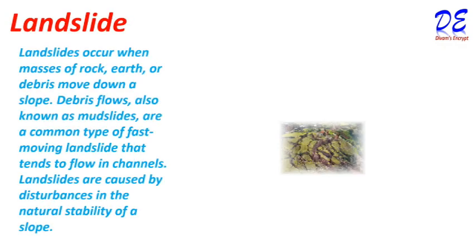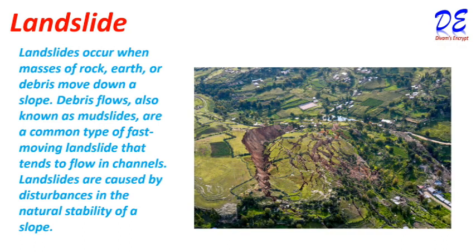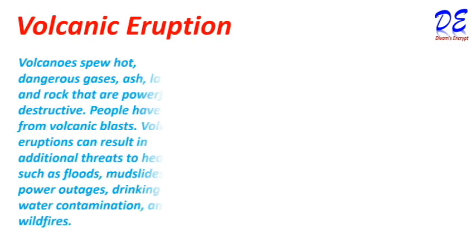Landslide. Landslides occur when masses of rock, earth, or debris move down a slope. Debris flows, also known as mudslides, are a common type of fast-moving landslide that tends to flow in channels. Landslides are caused by a disturbance in the natural stability of a slope.